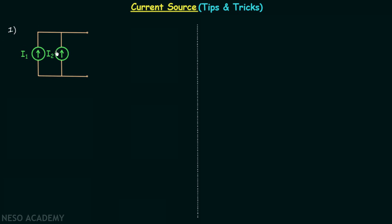In the first case, we have two current sources connected in parallel. The first source provides current I1 in one direction and the second source provides current I2 in its direction. Current I1 and I2 flow toward a particular node where we apply KCL to get current I. Consider some element connected across the two terminals so current I will flow, and using KCL we can say that current I is equal to I1 plus I2.